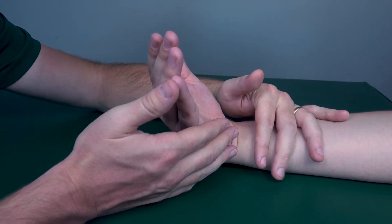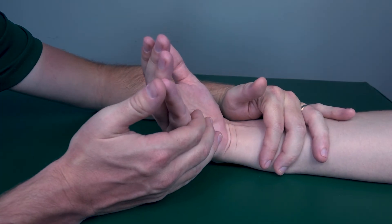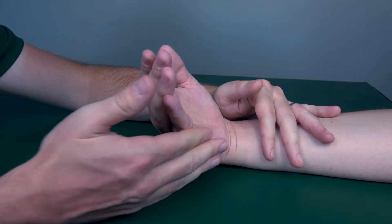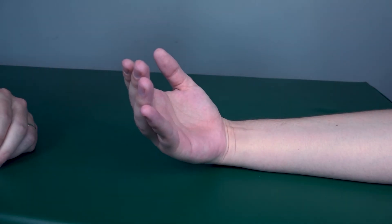Once again, stabilize on the wrist or proximal to the wrist. So resist me on three, two, one. And once again, that is testing for the flexor carpi ulnaris.